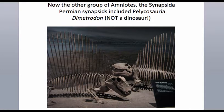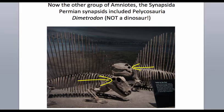Moving to the synapsid lineage: here is Dimetrodon. Some of you might recognize this from plastic dinosaur kits — but news flash, this is not a dinosaur at all, and not even from the right time period. Dimetrodon are Permian animals that predate the earliest dinosaurs by several hundred million years. Not only that, they're in the wrong group of amniotes — they're synapsids, on the same lineage that gives rise to us. You can tell because these Permian animals have only one post-orbital fenestra. Dimetrodon are part of the Pelycosauria; by the time we get across the Permian-Triassic boundary, the pelycosaurs like Dimetrodon were gone.